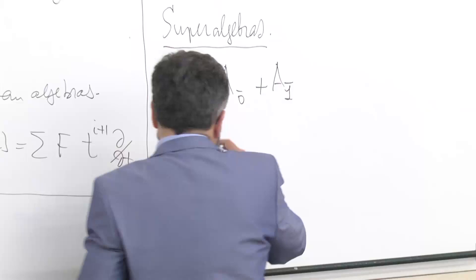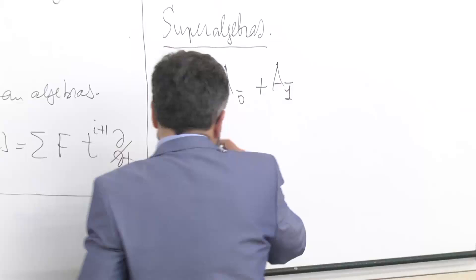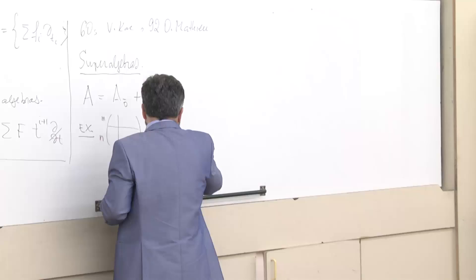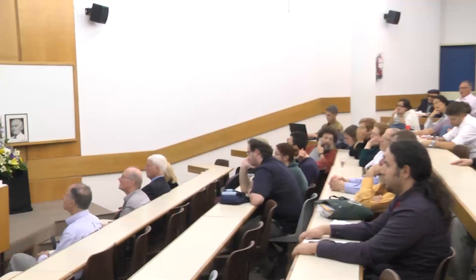Example: let us consider matrices divided into blocks — a block of size M and a block of size N. It has a natural grading: block-diagonal matrices are even, and off-diagonal matrices are odd. So this is a superalgebra.